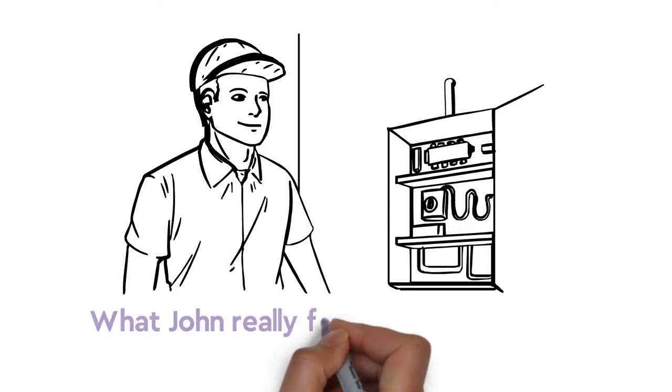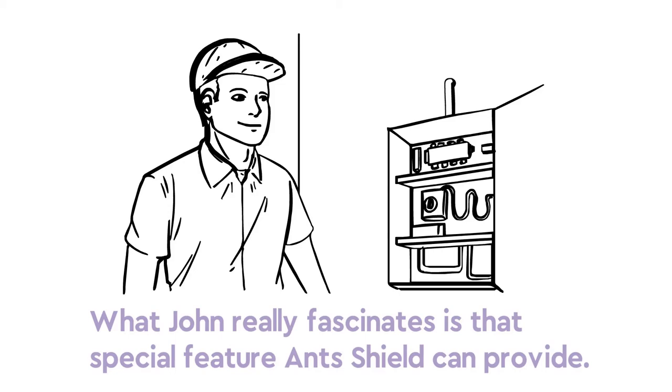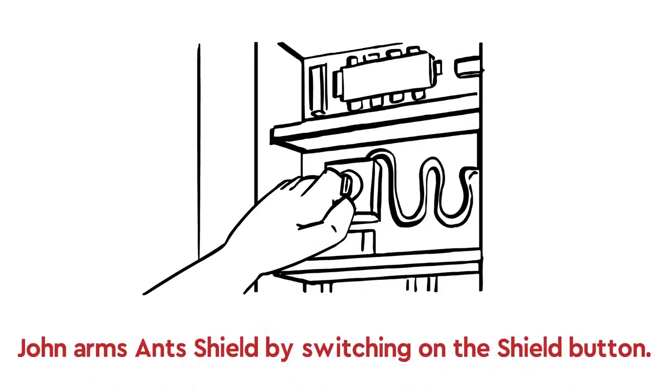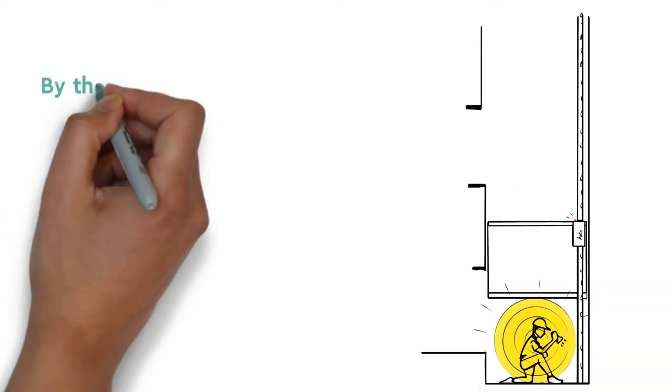What John really fascinates is that special feature ANT shield can provide. John arms ANT shield by switching on the shield button. By that a safety area is created.